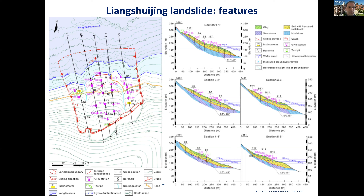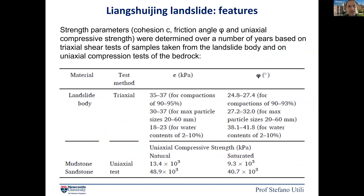To perform finite element simulations that tell us how dangerous this landslide is and how close it is to triggering, we needed strength data. The strength parameters — friction angle and uniaxial compressive strength — were determined over a number of years using direct shear tests from the landslide body and uniaxial compression tests from the bedrock, taken from boreholes in different locations. Unfortunately, there are not as many samples as would be ideal, so there is some uncertainty.